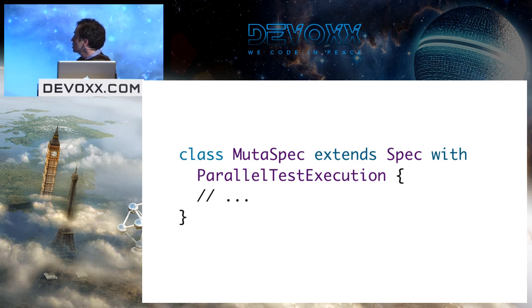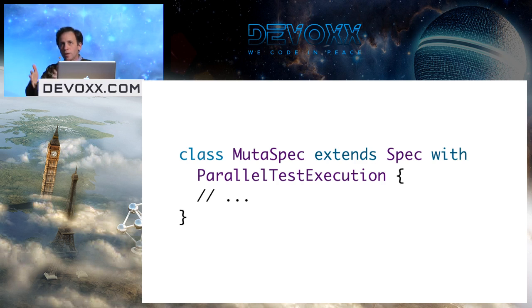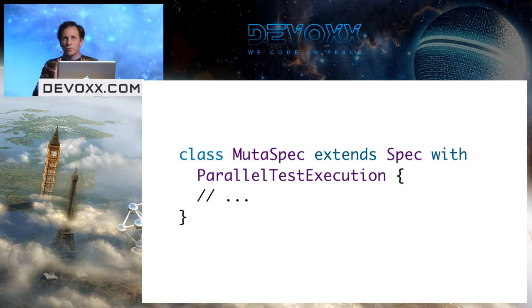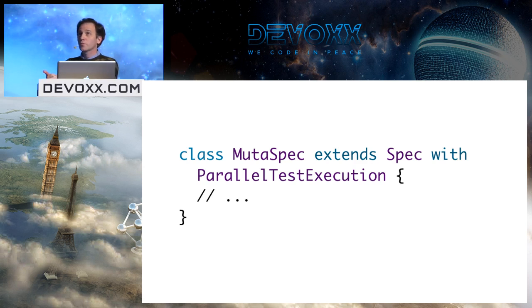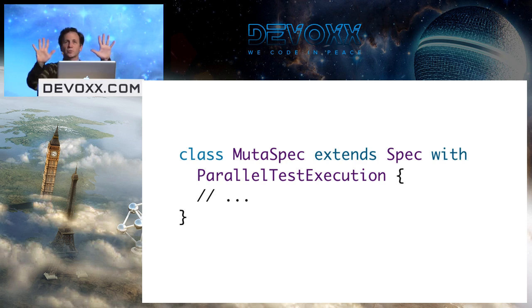One thing I did in ScalaTest to prevent errors was around parallel test execution. CPU speeds aren't getting faster, but we're getting more cores, and tests are usually embarrassingly parallelizable. If you run tests in parallel, they need to be thread-safe. I thought that was hard for many people. So I made sequential the default — unless you ask for parallel, you don't get it. When you do ask, it runs different test classes in parallel but tests inside a class run sequentially.